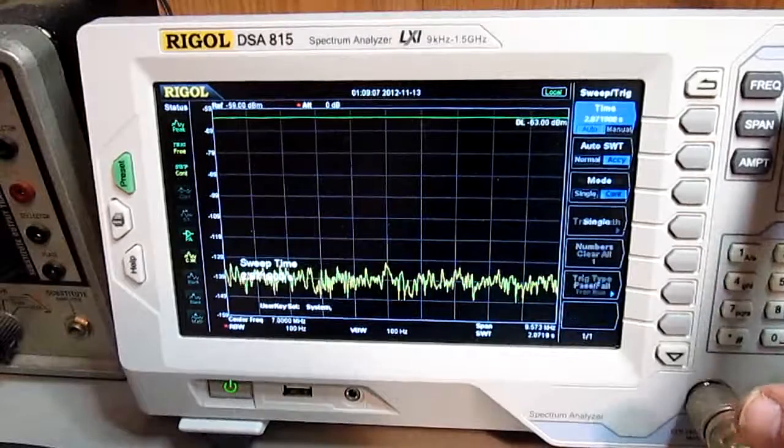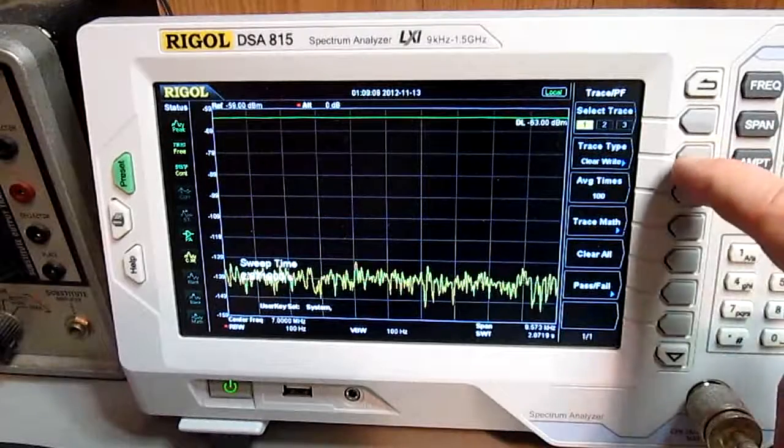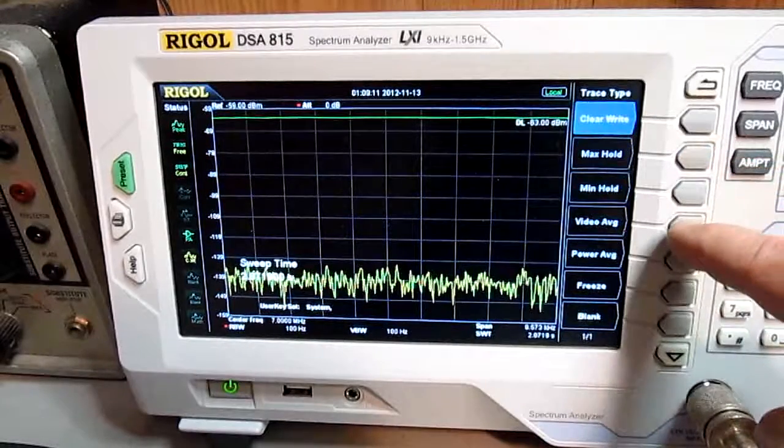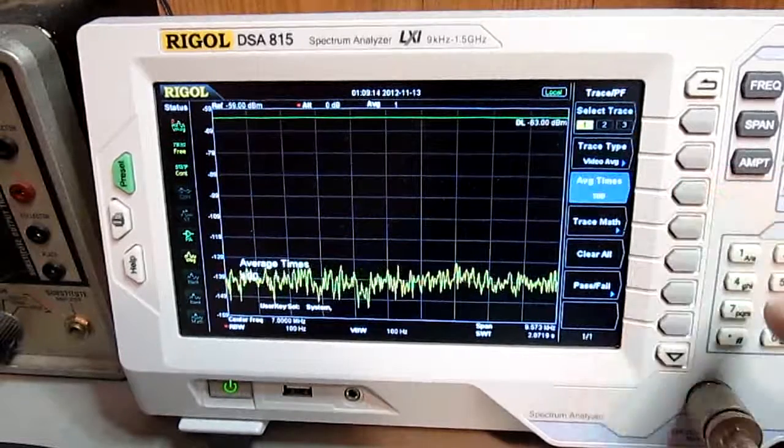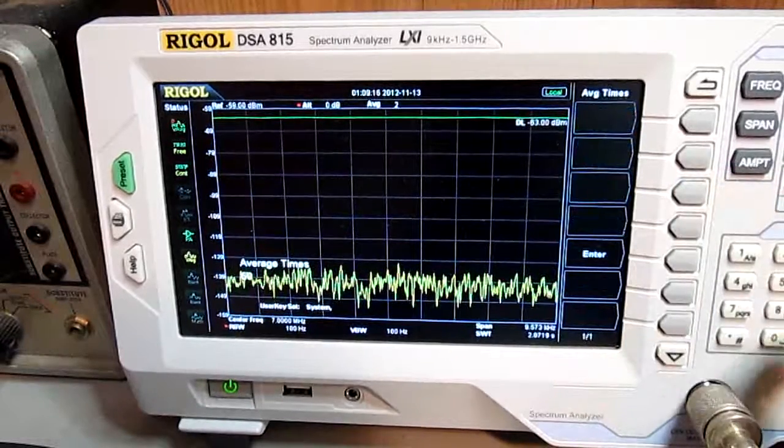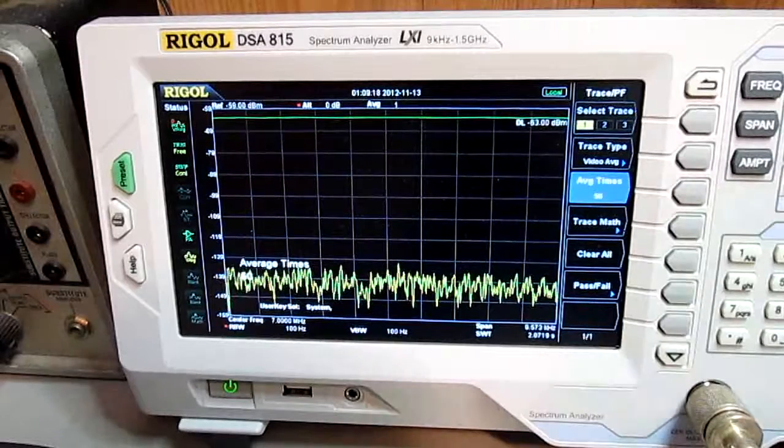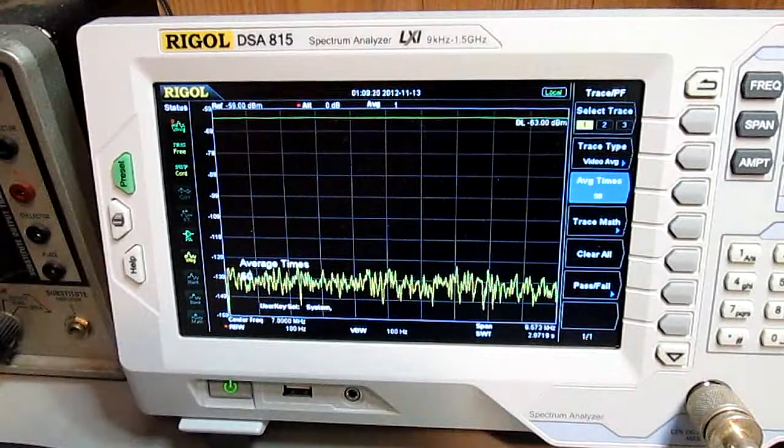So I'm going to go to trace, and then trace type, video average, and I'm going to change the number of times to 50, and we'll see if the signal pops up out of that noise.